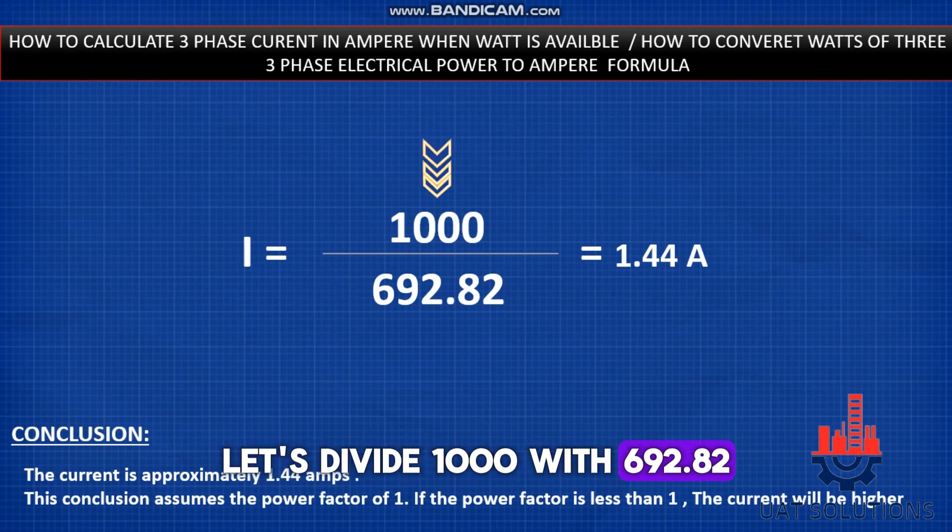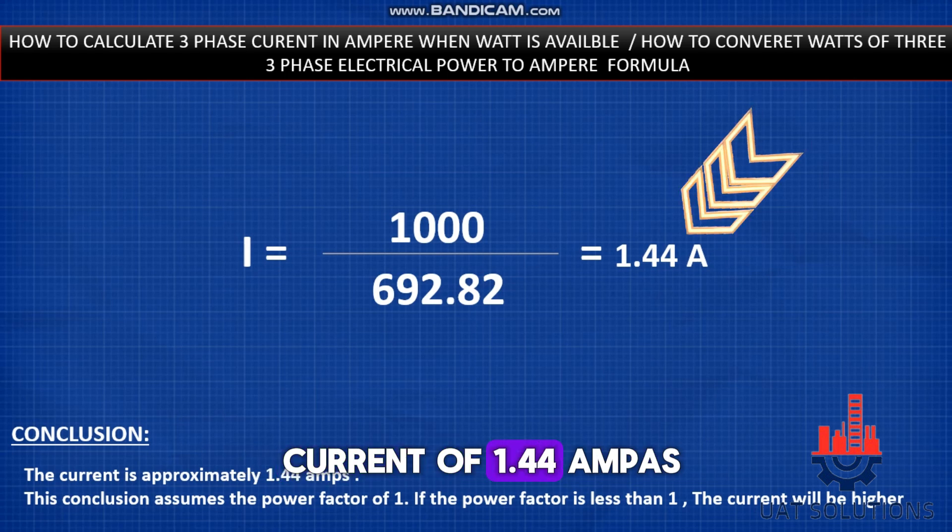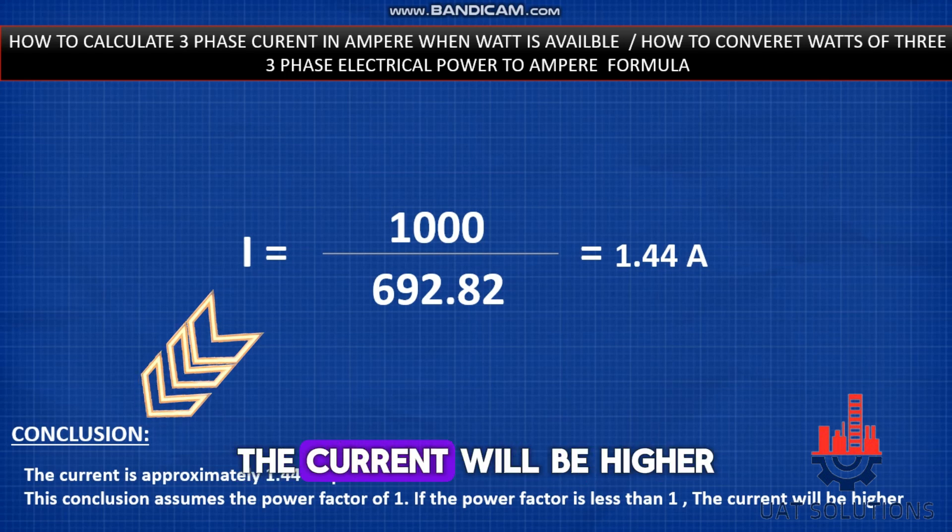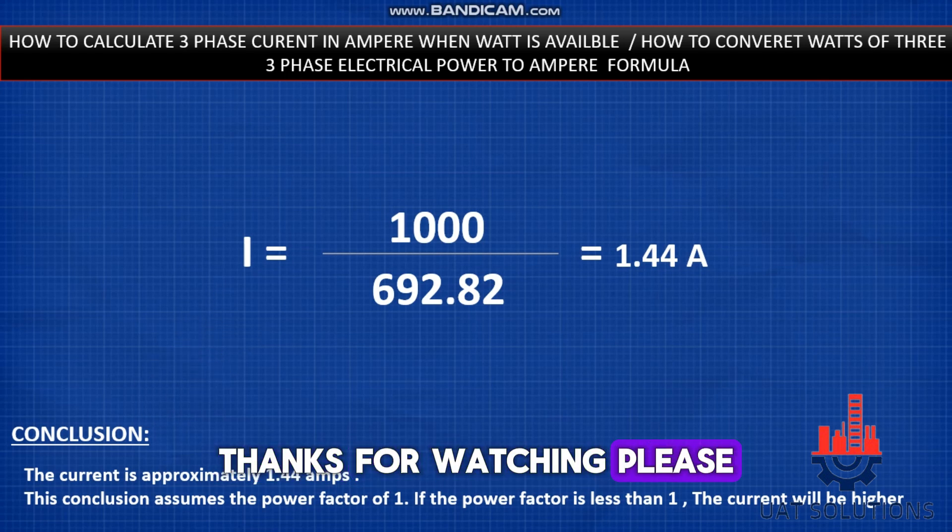Dividing 1000 by 692.82, we get an approximate current of 1.44 amperes. Please note this calculation assumes a power factor of 1. If the power factor is less than 1, the current will be higher. Thanks for watching!